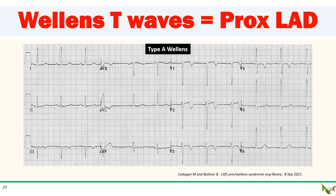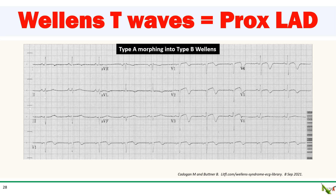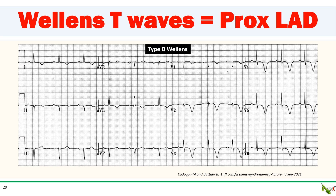Here is a classic example of Type A Wellens. You see the biphasic T-waves in leads V2 and V3. The R-wave progression is normal. There is no LVH. You're also starting to see a little T-wave inversion in lead V4 as well. Here you see more of a transition from Type A to Type B — you still see the biphasic T-waves in V2 and V3, but the T-wave inversion is more prominent, and you also see deeper T-waves in V4 as well as a little in V5. The R-wave progression is normal. Here we see an example of Type B Wellens with deep symmetric T-wave inversions across the precordium with some T-wave inversion in the lateral leads. Notice the R-wave progression is still normal and there is no LVH pattern.